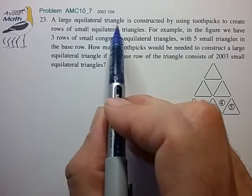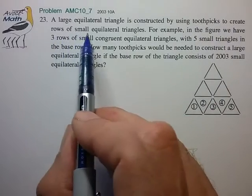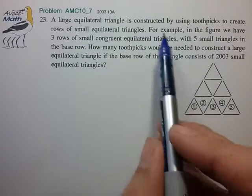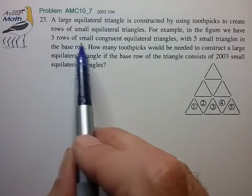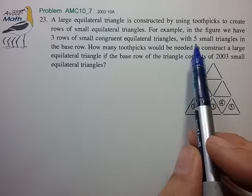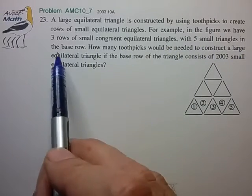A large equilateral triangle is constructed using toothpicks to create rows of small equilateral triangles. For example, in the figure we have three rows of small congruent equilateral triangles with five small triangles in the base row.